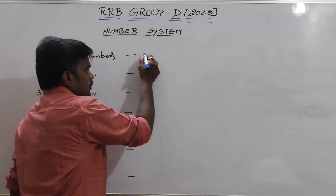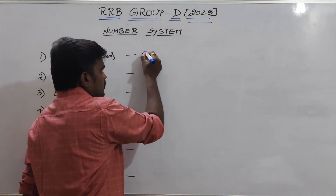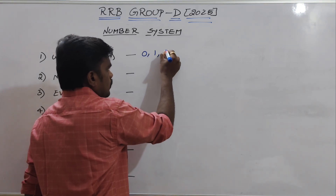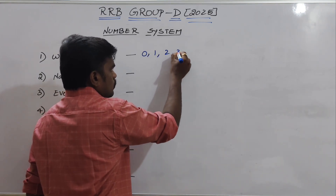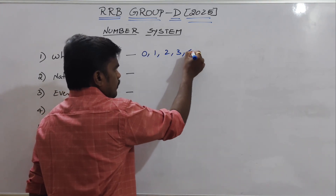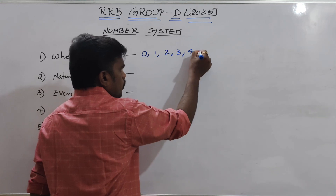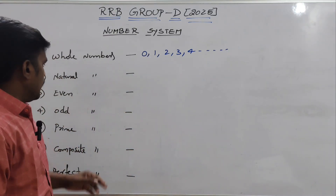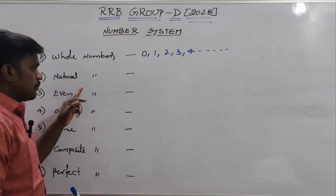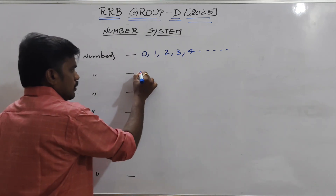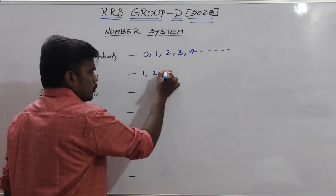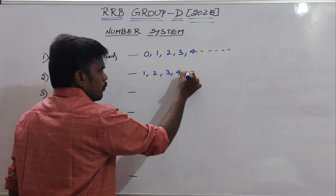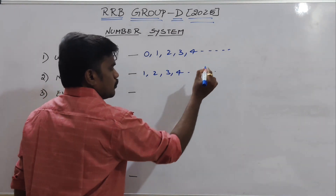Whole numbers start from 0, 1, 2, 3, 4 and so on. And coming to the natural numbers: 1, 2, 3, 4 and so on.